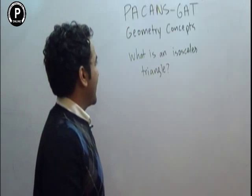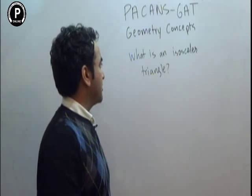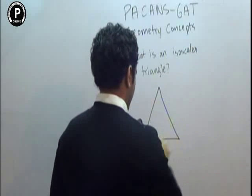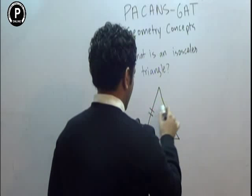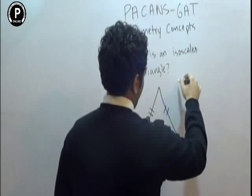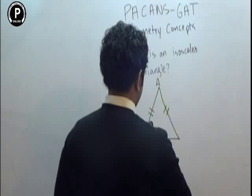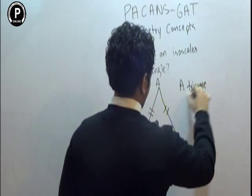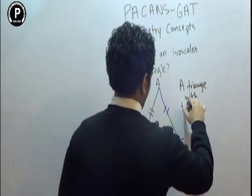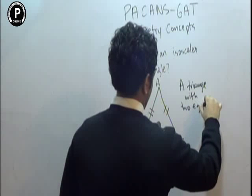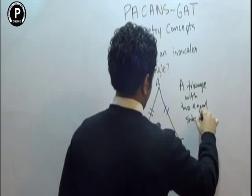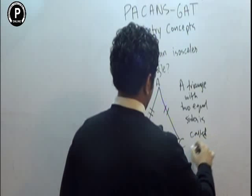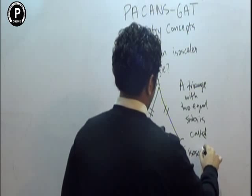Welcome to Peckins GATT Geometry Concepts. An isosceles triangle is one which has two equal sides. A triangle with two equal sides is called isosceles.